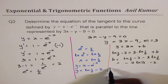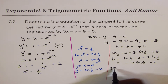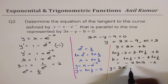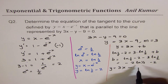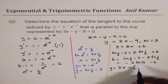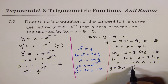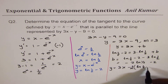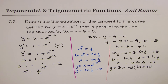Therefore the equation of the tangent line is y equals 3x minus 2(ln(1/2) plus 1). So I hope that's absolutely clear. Let's move on to question number three.